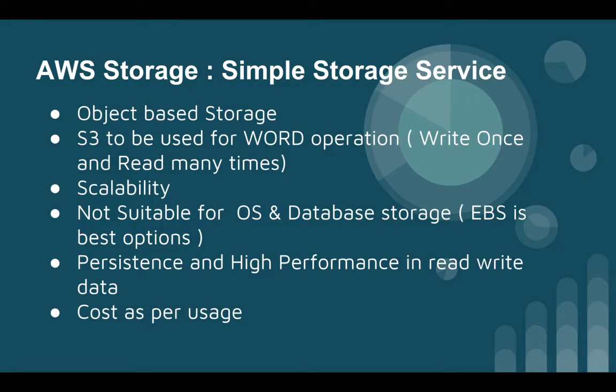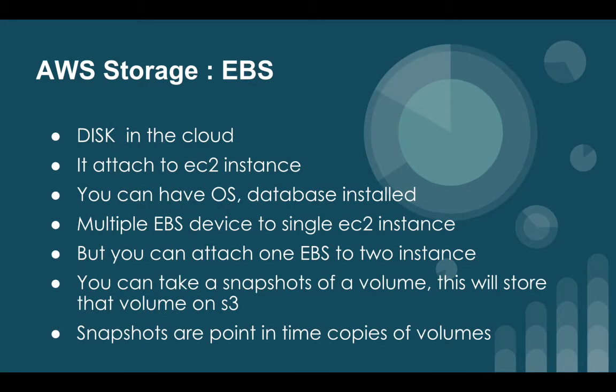Next is Elastic Block Storage. The name suggests it's block storage and it's like your disk in the cloud. Amazon EBS allows you to create storage volumes and attach them to Amazon EC2 instances. Once attached, you can create a file system on top of the volume, run a database, or use it in any other way you would use a block device. Amazon EBS volumes are placed in a specific availability zone where they are automatically replicated to protect you from the failure of a single component.